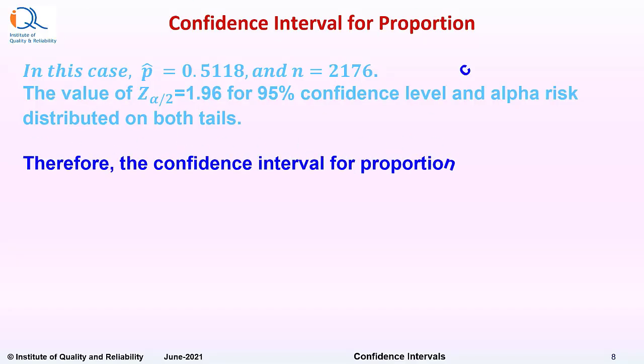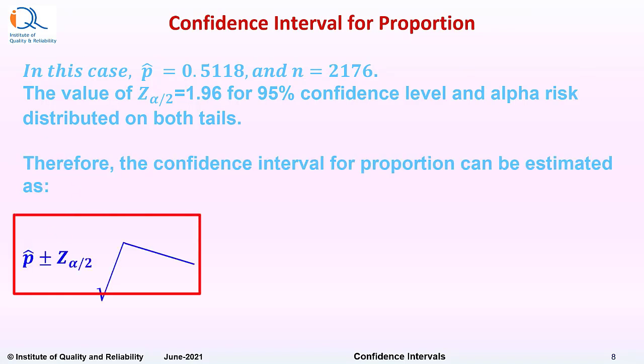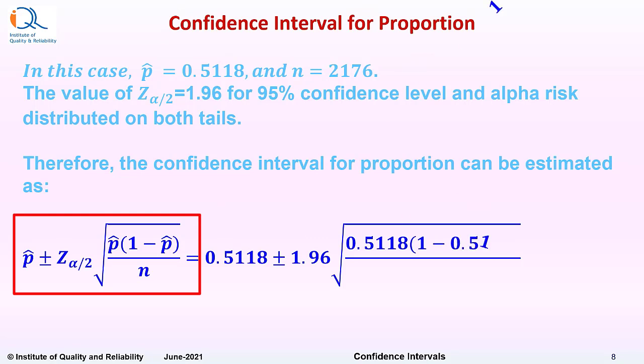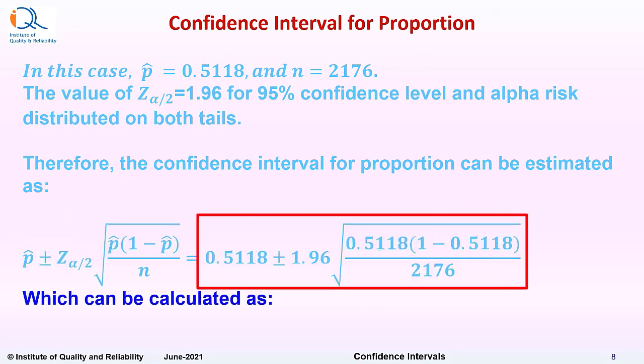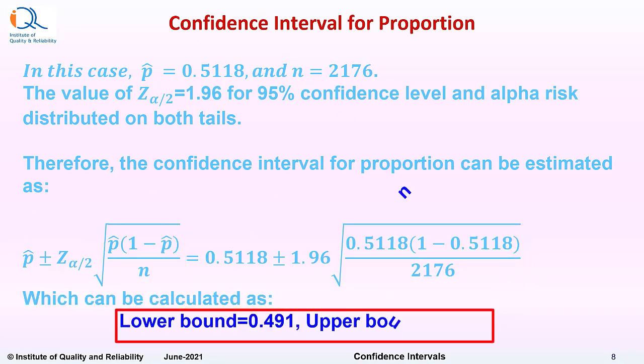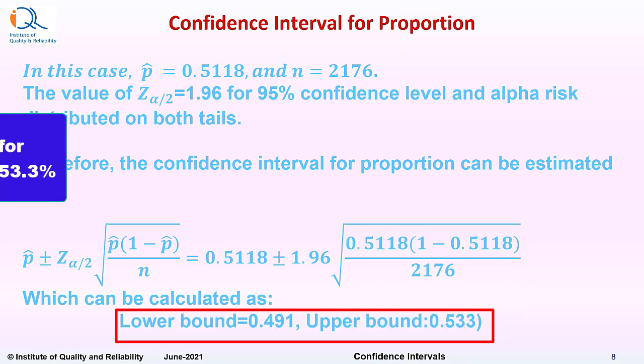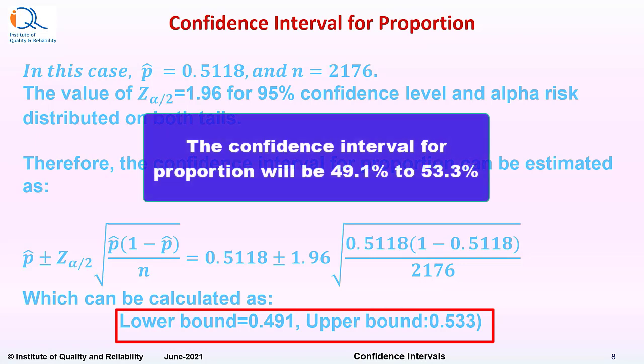Therefore, the confidence interval for proportion can be estimated as sample proportion plus or minus z alpha by 2 square root of proportion into 1 minus proportion upon sample size. Substituting the values, we can easily get this as lower bound 0.491 and upper bound as 0.533, that is 49.1% to 53.3%.